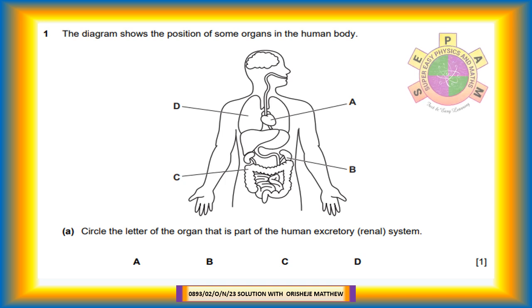Question 1. The diagram shows the position of some organs in the human body. First, let us identify the labeled parts from A to D. A is the heart, B is the kidney, C is the large intestine, D is the lungs. Question 1a: Circle the letter of the organ that is part of the human excretory renal system. The correct organ is the kidney represented by letter B.